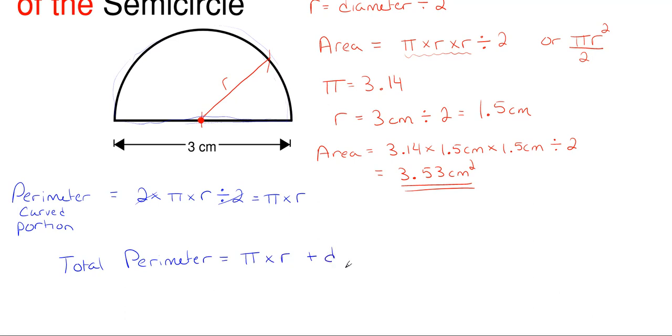So the total perimeter will be equal to π times r and then you're going to add in your diameter. Well putting this in we have 3.14 times my radius which is 1.5 centimeters and then we have to add in our diameter of 3 centimeters and this gives us a total distance for our perimeter of 7.71 centimeters.